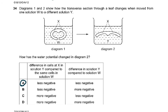Because that remains, you see, the active transport is for molecules which are sort of needed by force by the membrane. So it's from a low to a high concentration. Question 34. Diagram 1 and 2 show the transverse section through a leaf changes when moved from one solution W to a different solution Y. In W, you see how it has curled up. This is the leaf which has curled up like this. And now in this, it has sort of become straighter.